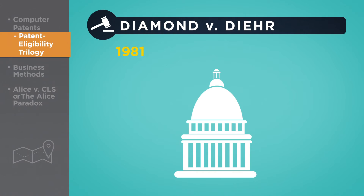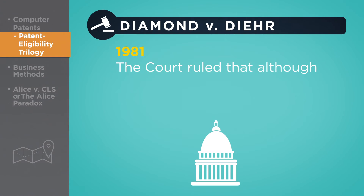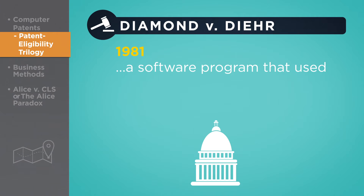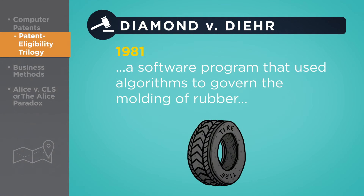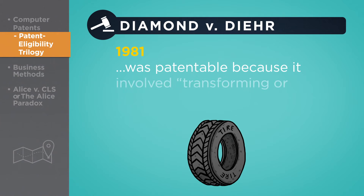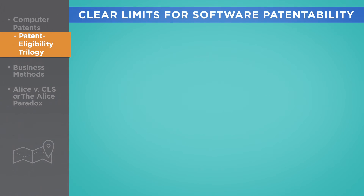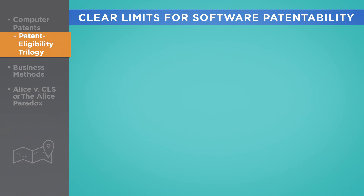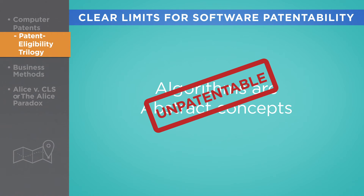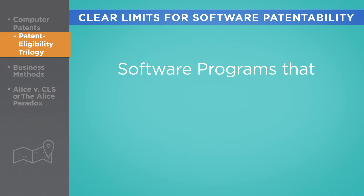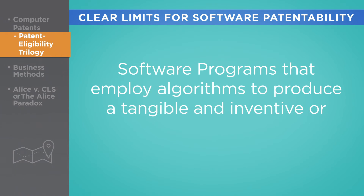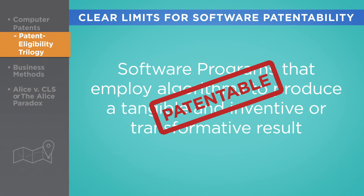Lastly, in the 1981 case of Diamond v. Diehr, the Supreme Court made its third attempt to define the patent eligibility of software. The court ultimately ruled that although algorithms by themselves are not patentable, a software program that used algorithms to govern the molding of raw synthetic rubber into cured precision products was in fact patentable because it involved transforming or reducing an article to a different state or thing. These three rulings appeared to define clear limits for software patentability: that although algorithms by themselves are abstract concepts and therefore unpatentable, software programs may be patented if they employ algorithms to produce a tangible and inventive or transformative result.